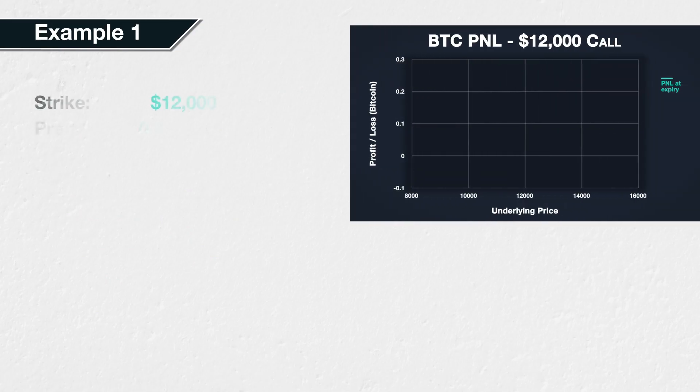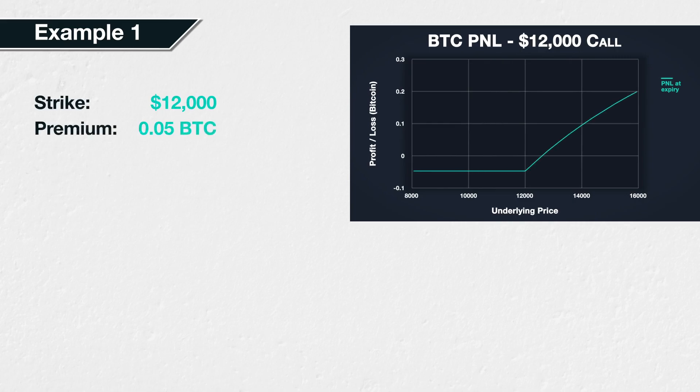Example one: suppose Bitcoin is currently trading at a price of eleven thousand dollars. We expect the price to increase, so we purchase a Bitcoin call option with a strike price of twelve thousand dollars. The price of this call option is 0.05 BTC — that's five percent of a Bitcoin. At expiry, the price of Bitcoin has indeed increased to fifteen thousand dollars, and we would like to calculate what our profit is.